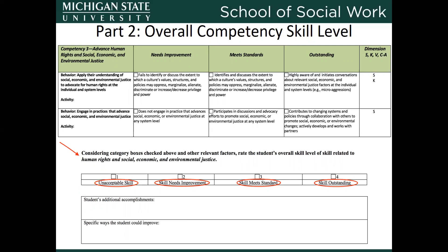For each competency, we are asking you to select a ranking from one to four on the ranking scale. Additionally, and equally important, we are asking that you provide the student with narrative information in two areas. The first is on the student's additional accomplishments, which is especially important in those cases where you've ranked the student's behaviors as meets standard, but because of your additional observations reflecting the student's abilities with the entire competency, you want to rank them as a four, skill outstanding, rather than a three, skill meets standards. Without that additional narrative to help us understand your decision, we are unable to support the changed ranking. Similarly, your narrative is important when there are areas for student improvement. If the student is ranked as skill needs improvement or unacceptable skill, your specific recommendations for how they can improve is very important for their professional development.